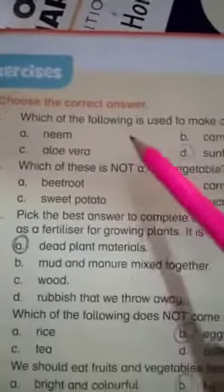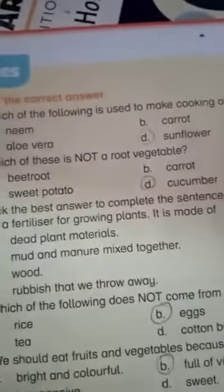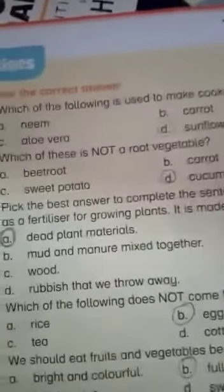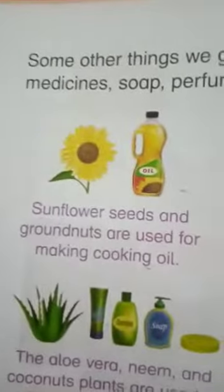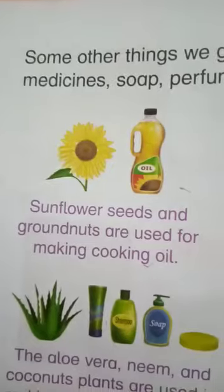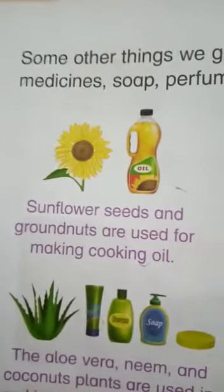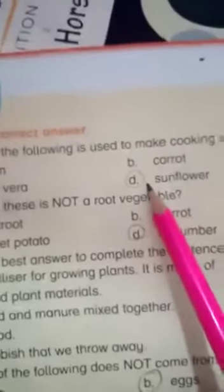First, here is our exercise. Choose the correct answer. Here is our first one: which of the following is used to make cooking oil? We use sunflower seeds and ground nuts for cooking oil. Here we are going to circle on the sunflower.